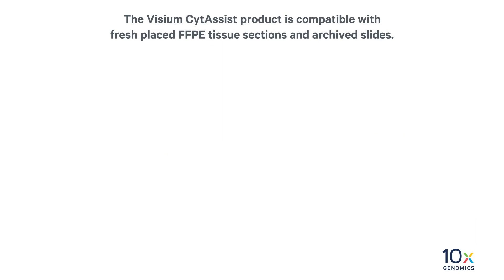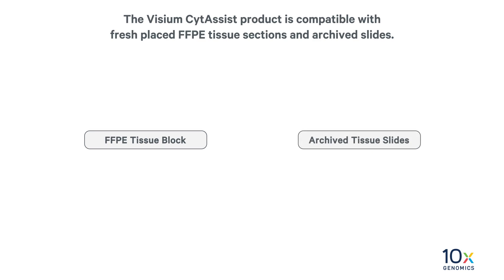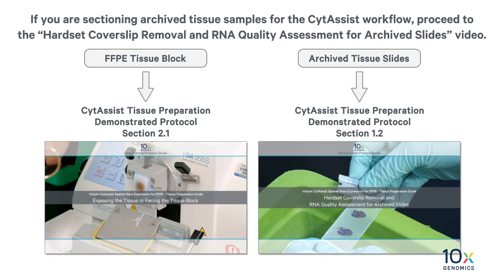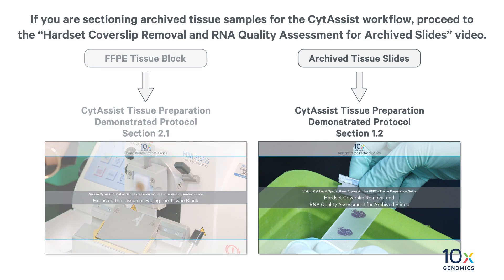We are preparing to section FFPE samples. The Visium SideAssist product is compatible with fresh placed FFPE tissue sections and archived slides. If you are sectioning archived tissue samples for the SideAssist workflow, proceed to the hard set cover slip removal and RNA quality assessment for archived slides video.